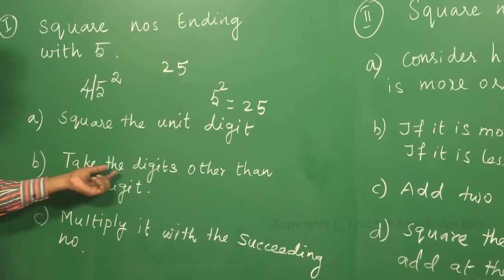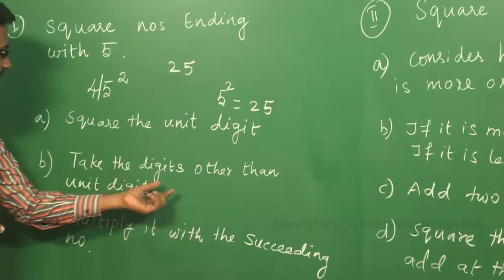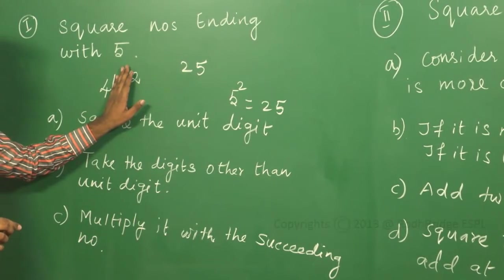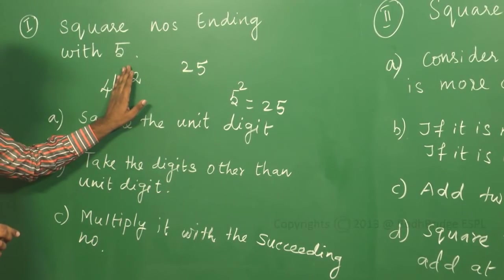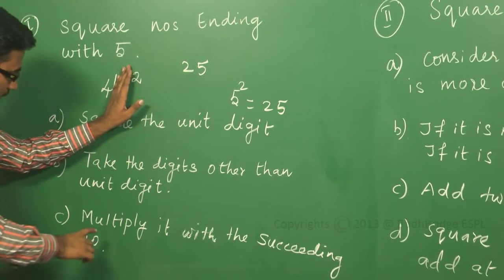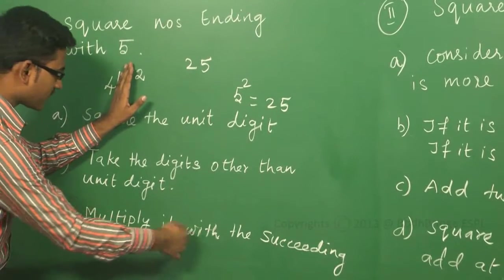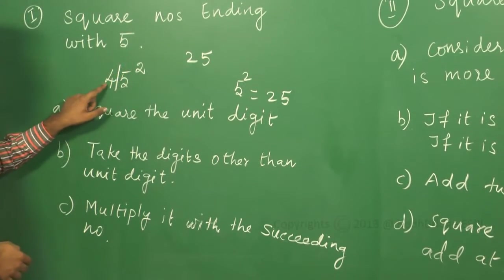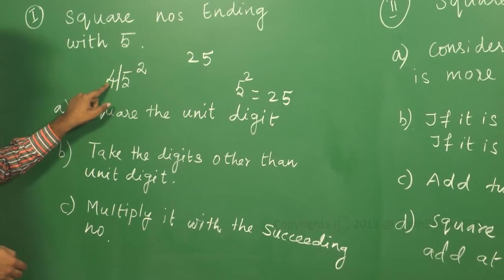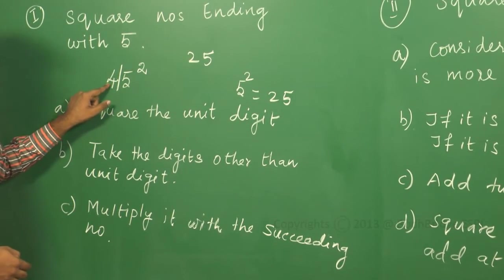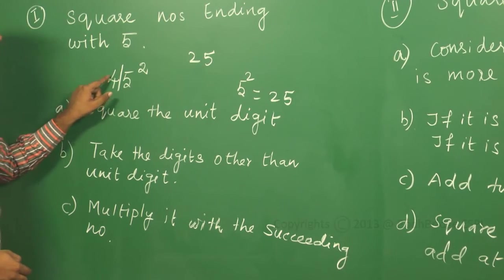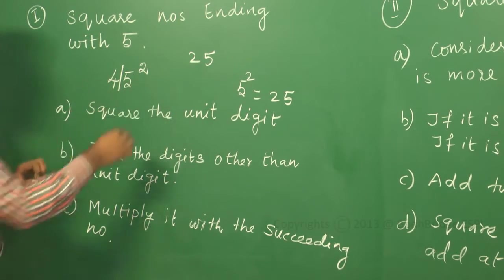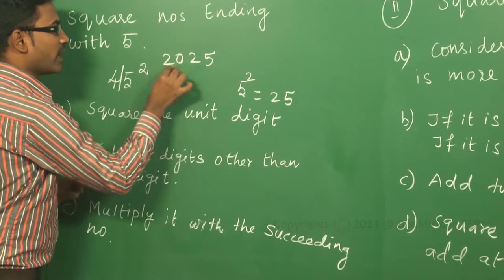Second, you have to take the digits other than the unit digit. Other than the unit digit is 4. Then multiply it with the succeeding number. What is the succeeding number for 4? It is 5. So 4 into 5 will give me the result 20. So: 20, 25.